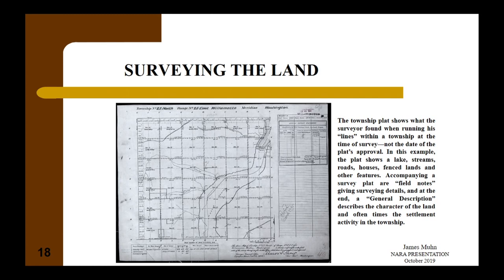The basis of legal land description is the township in the rectangular survey system. A surveyed township plat shows what the surveyor found when running his lines within a township at the time of survey, not the date the plat is approved. The plat shows lakes, streams, roads, houses, fenced lands, and other features. Accompanying the survey plat are field notes giving surveying details and, at the end, a general description of the character of the land and often the settlement activity in the township. If settlers lived on public lands prior to survey, they should appear on the plat, though those in a ravine might be missed since survey lines are a mile apart.